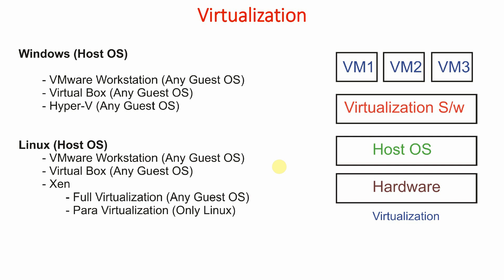For example, on my laptop I have 16 GB of RAM, an i7 processor, and about 1250 GB of hard disk. If I am going to run only one operating system — in my case Windows 10 — with so many resources, that is a wastage. So what we can do is implement virtualization.